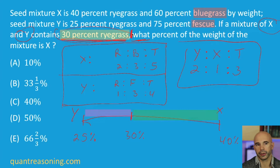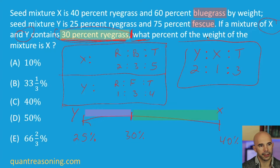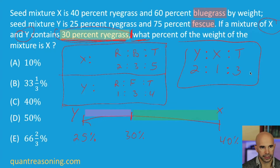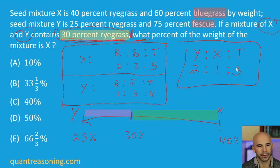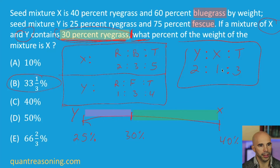I haven't finished reading the question yet, but I've already made this inference. Now I'm ready to keep reading. 'What percent of the weight of the mixture' — so out of the total mixture, that's this column — 'what percent is X?' So X is this column. One out of three — what percent is that? Well, that's answer choice B.